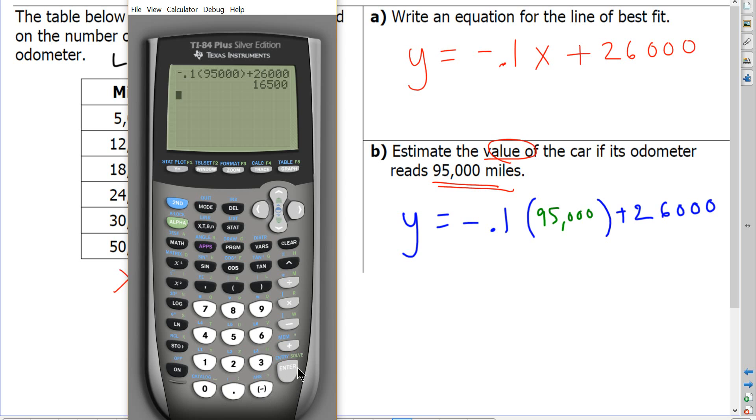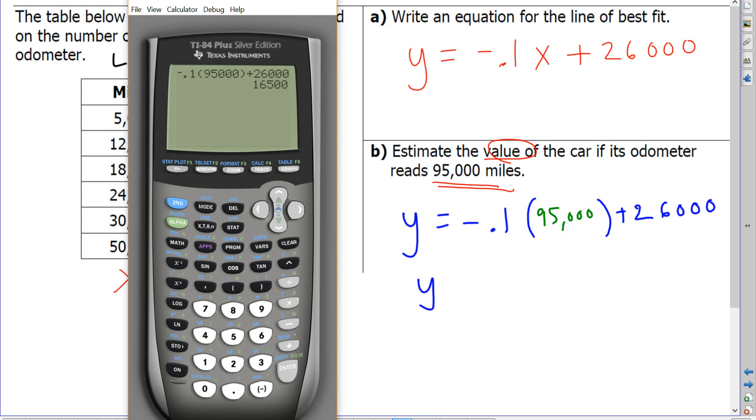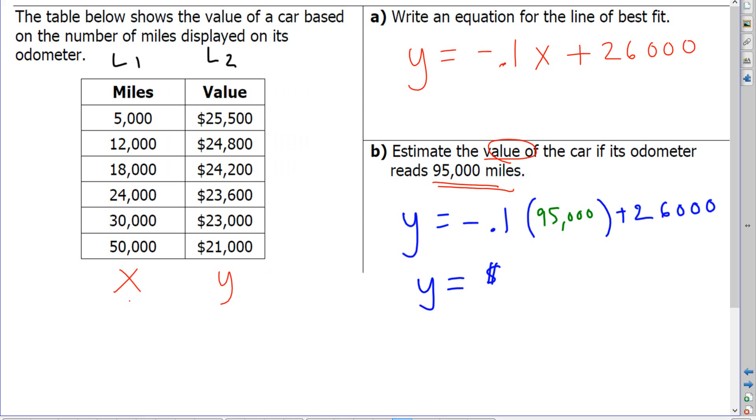And it looks like that my value here for y, right, my y value, will be 16,500. So the y value, the value of the car, when the mileage is 95,000, is approximately 16,500.